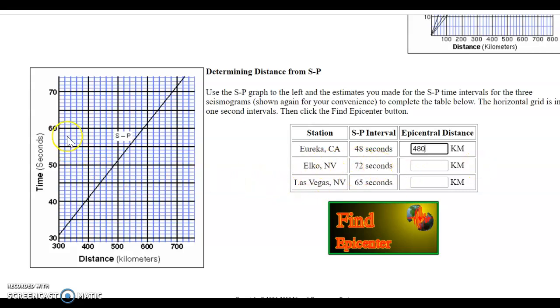Elko, Nevada was 72 seconds. So way up here, two lines above 70. That intersects right about there, about 700 kilometers.